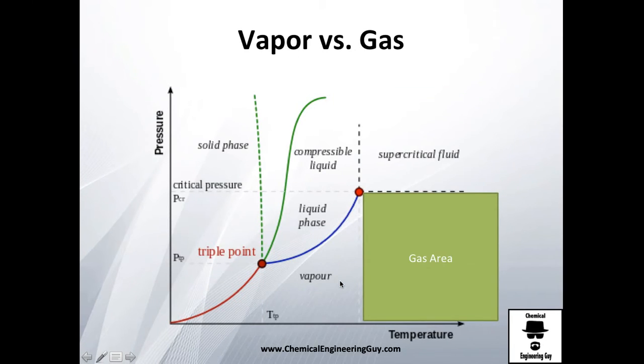Okay, so that's essentially everything on vapor versus gas. It's easy to get but it's difficult I think to really, really understand why when you pressurize a vapor you get a liquid, and why when you pressurize a gas you get a supercritical fluid.